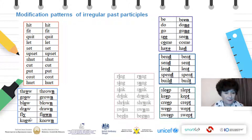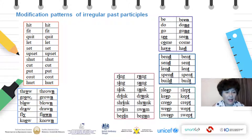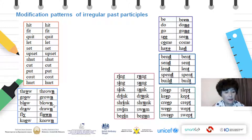The next one here in the blue box: we have throw — thrown, grow — grown, blow — blown. So apart from fly, all the rest have only N attached at the end.